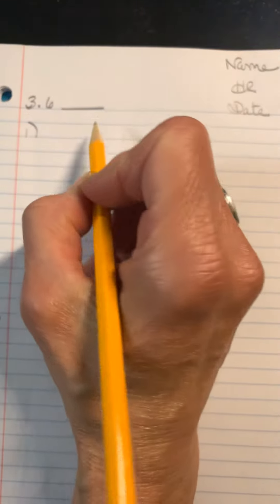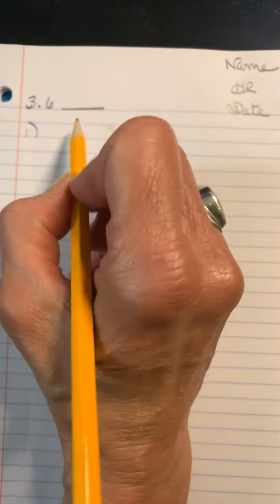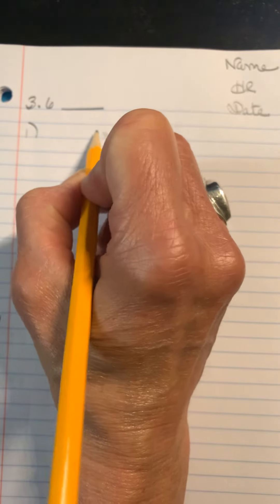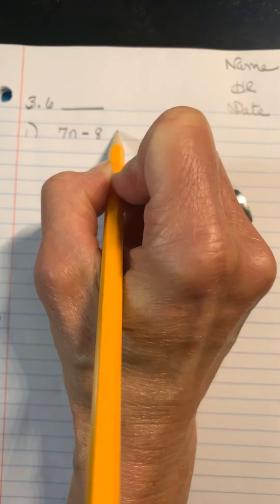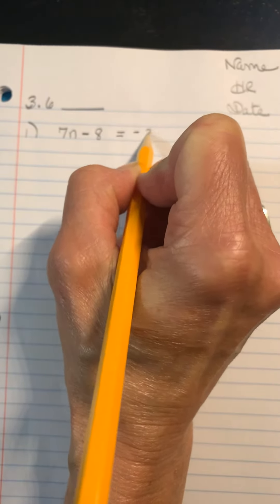So the first sentence reads, 8 less than 7 times a number is negative 29. Remember the less than - we kind of flip what we see. So it's 8 less than 7 times a number is negative 29.